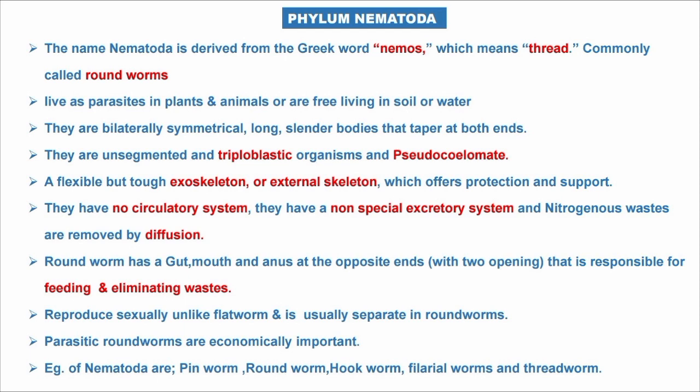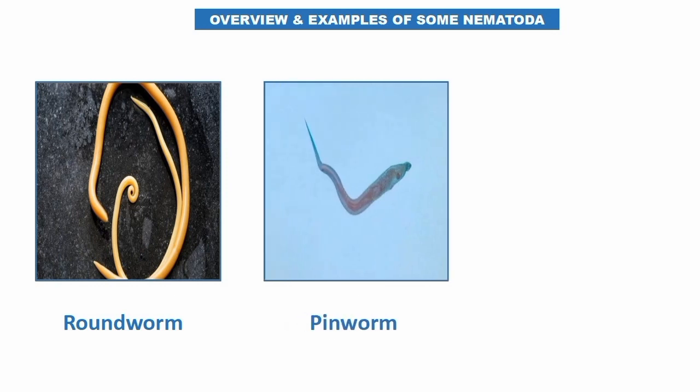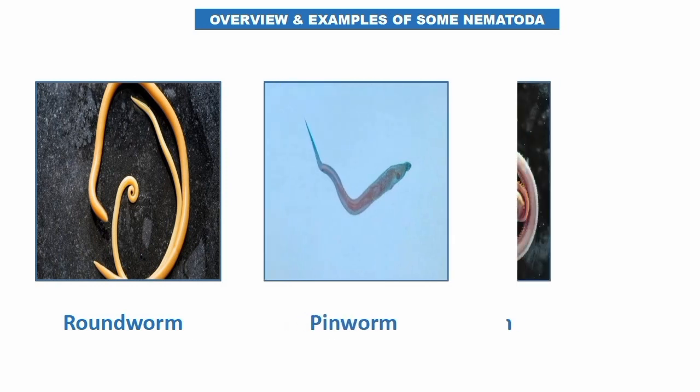Parasitic roundworms are economically important. Examples of Nematoda include pinworm, roundworm, hookworm, filarial worms, and trichina worms. Here are some visual examples of Nematoda: the first one is a roundworm, the next one is a pinworm, and the next one is a hookworm, as you can see here.